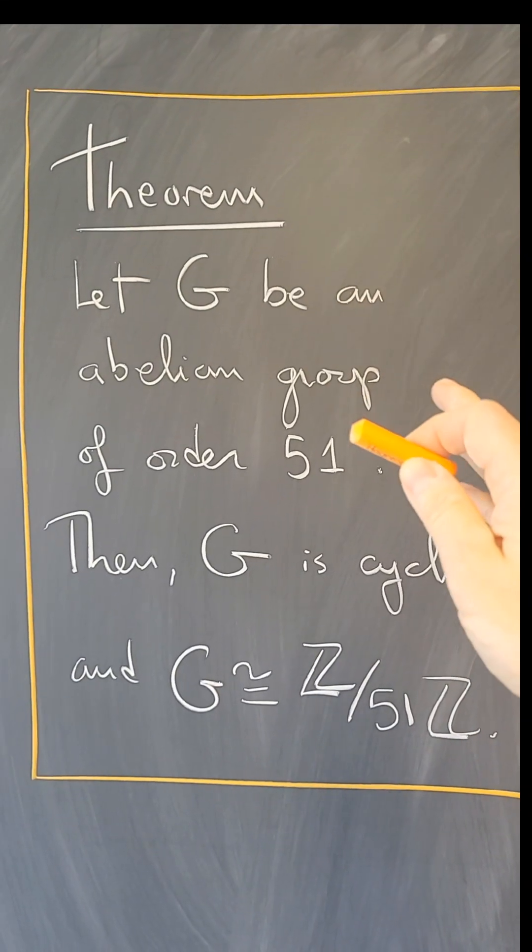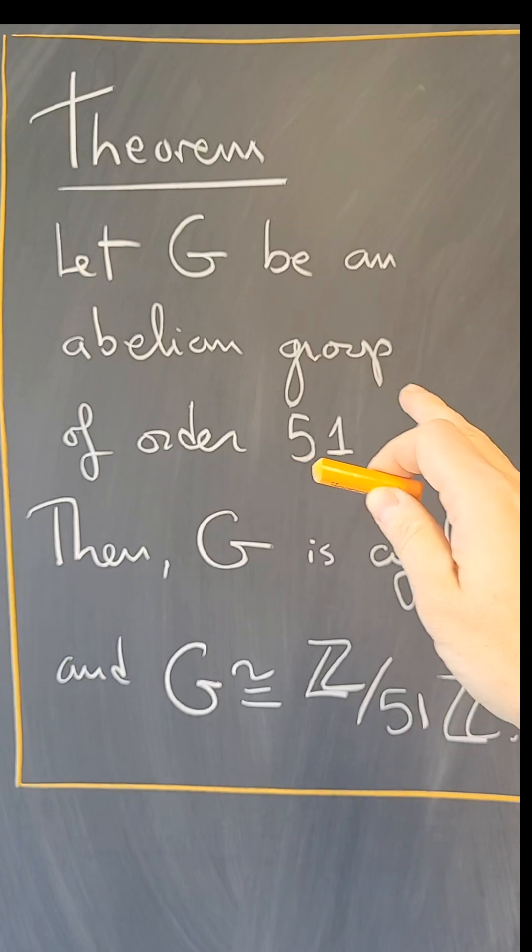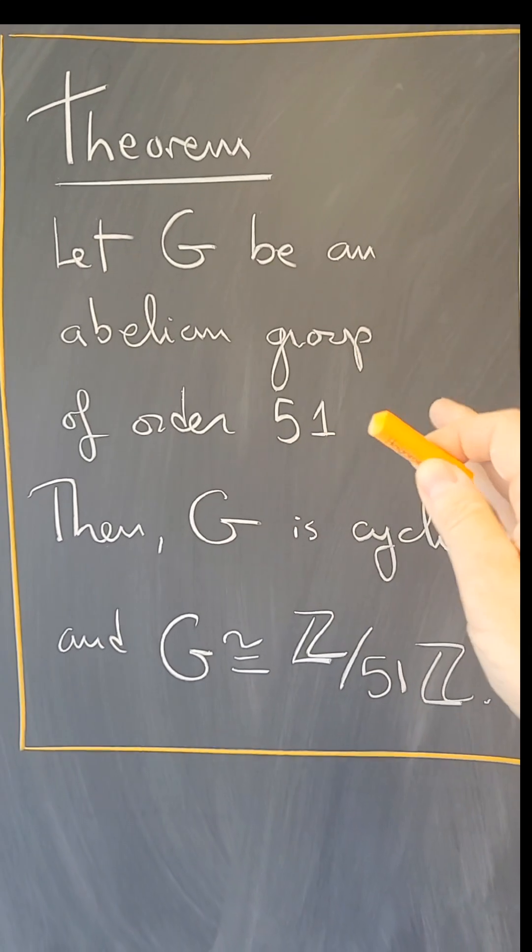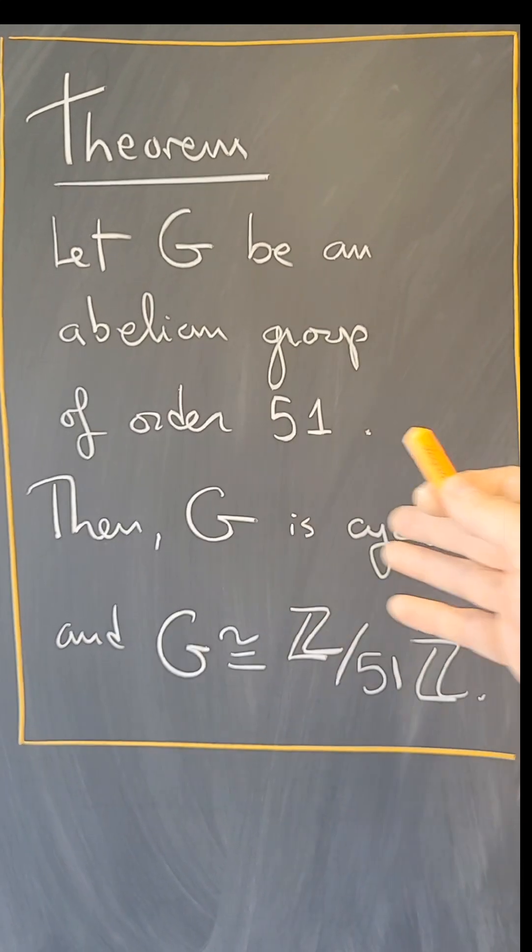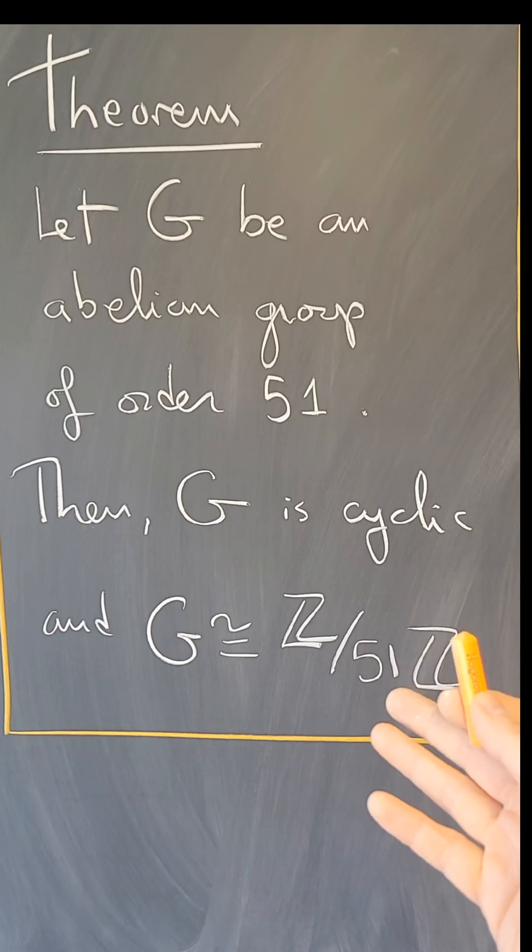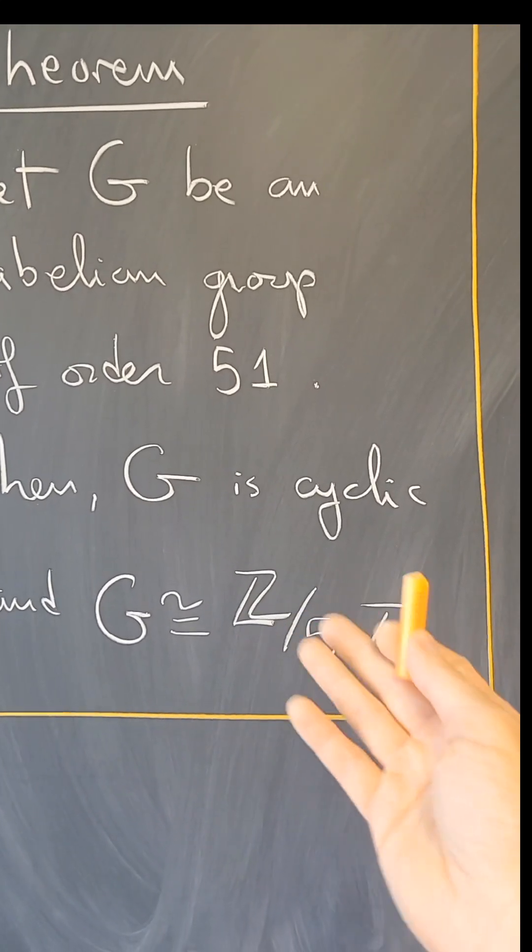Let's prove the following theorem in abstract algebra. Let G be an abelian group of order 51. Then there is, up to isomorphism, only one, and it is a cyclic group of order 51 which is therefore isomorphic to Z modulo 51.